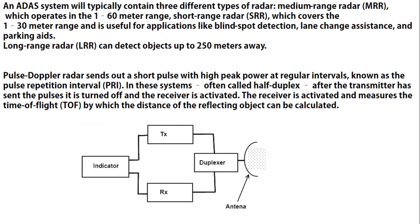The SRR is useful for applications like blind spot detection, lane change assistance, and parking aids. For the Long Range Radar, LRR, it can detect objects up to 250 meters away. Now let's look at the block diagram of the radar and its main components.